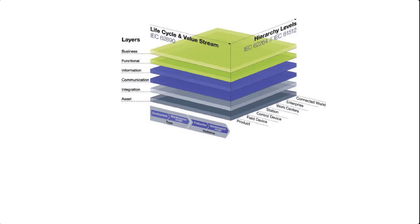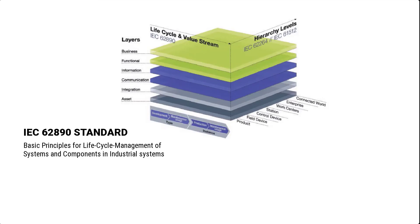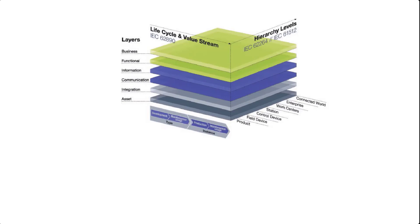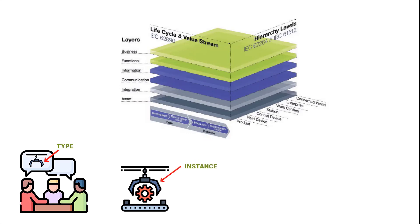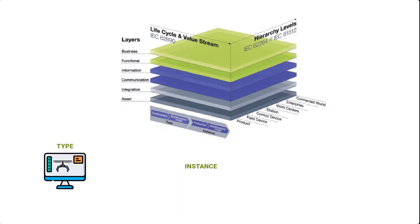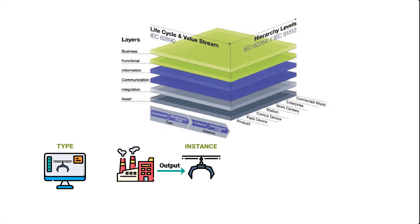For this axis, RAMI 4.0 borrowed from the IEC 62890 standard, which establishes basic principles for life cycle management of systems and components used in industrial systems. This axis highlights a clear distinction between what is called a 'type' of a component and what is called an 'instance' of a component. A type refers to the description of a product or machine in its basic idea before it is created, which could be in the form of documents or digital models. An instance refers to an individual physical copy of a component manufactured from that particular type description. In other words, a type is created during conceptualization, whereas an instance results from the manufacturing process that uses the type description as input.